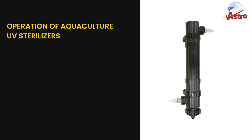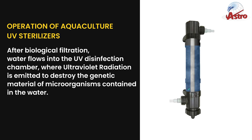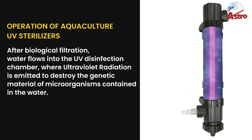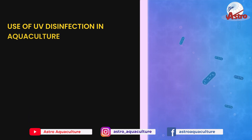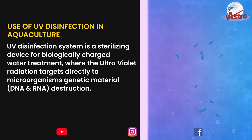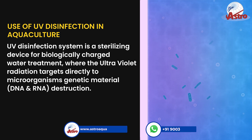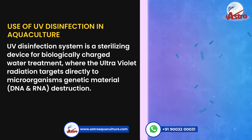In aquaculture UV sterilizer operation, after biological filtration, water flows into the UV disinfection chamber where ultraviolet radiation is emitted to destroy the genetic material of microorganisms contained in the water. The UV disinfection system targets microorganisms' genetic material — DNA and RNA — directly.